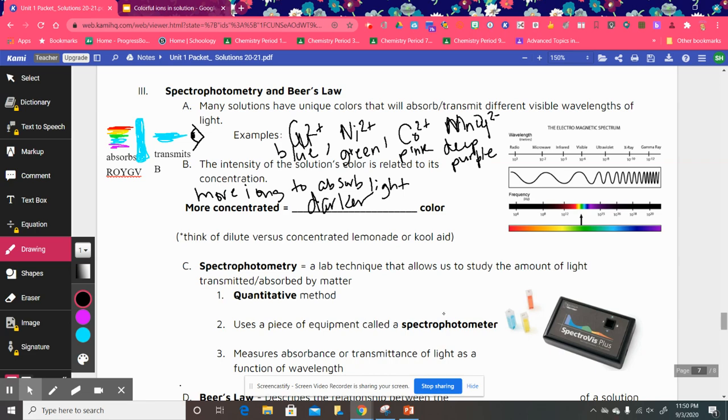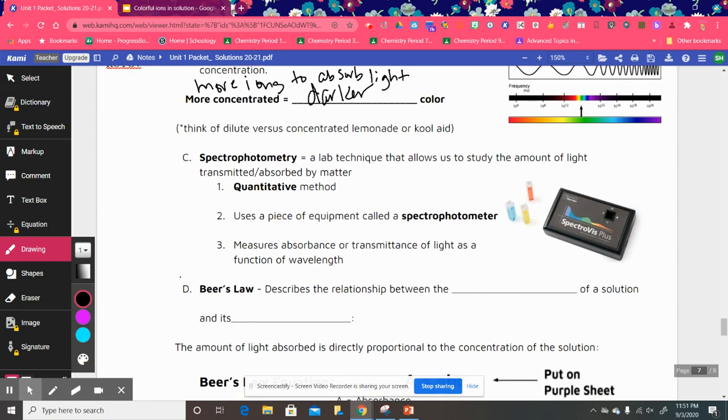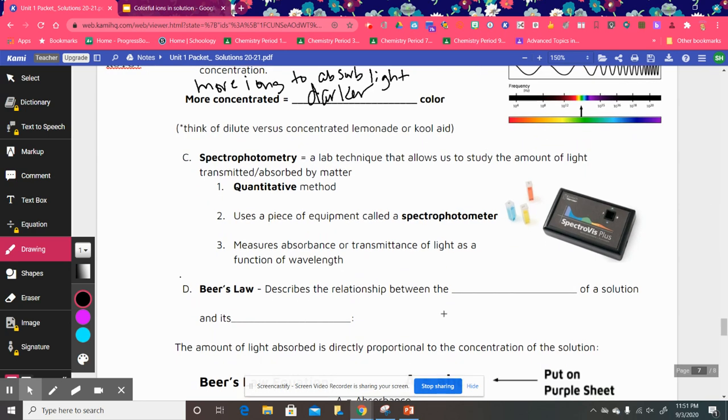So spectrophotometry is just a lab technique that's used to study the amount of light that's transmitted or absorbed by matter. It gives us a quantitative method, instead of just describing it as lighter or darker, it actually gives us a quantitative method of determining that amount of light. It uses a special piece of equipment called a spectrophotometer.